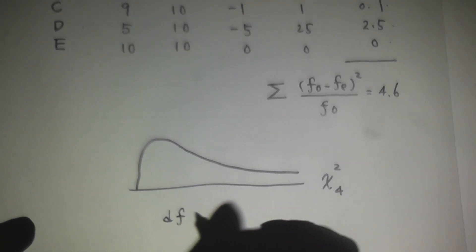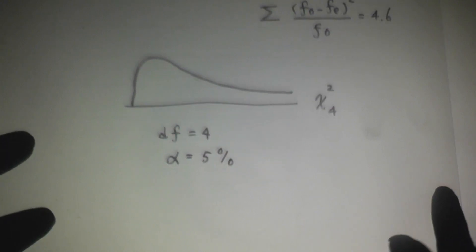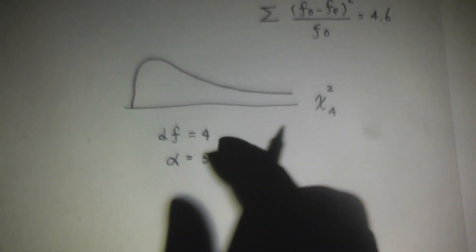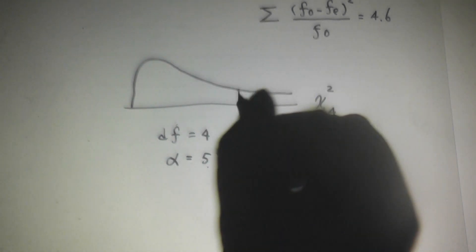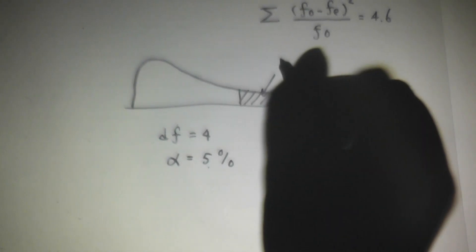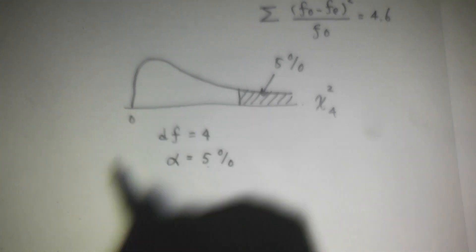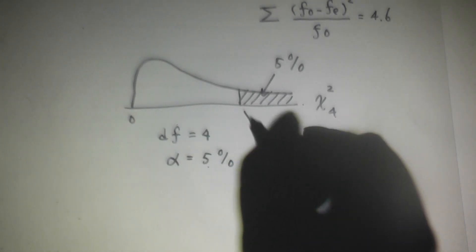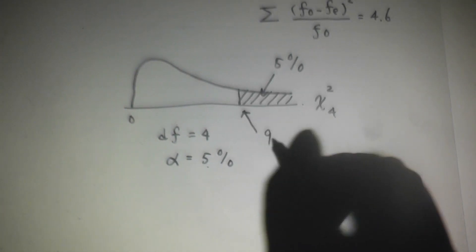And alpha is what? Five percent. When degree of freedom is four, alpha is five. Upper five percent. Upper tail would cut five percent off. If you check the table, you will find this number. It's 9.488.